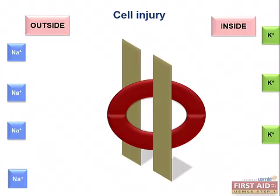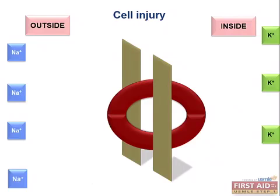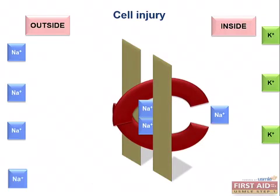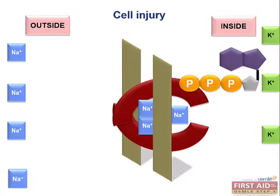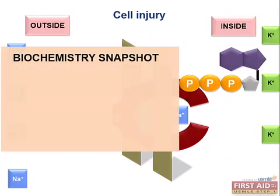So this pump actually exchanges three sodiums from the inside for two potassiums, and it requires energy in the form of ATP, as does almost everything that requires energy in the cell. We saw it earlier with apoptosis, and you'll see it in just about every other reaction within the cell. So ATP is required. Now, where do we get ATP from? To answer that, we have to talk about your favorite subject of all: biochemistry.